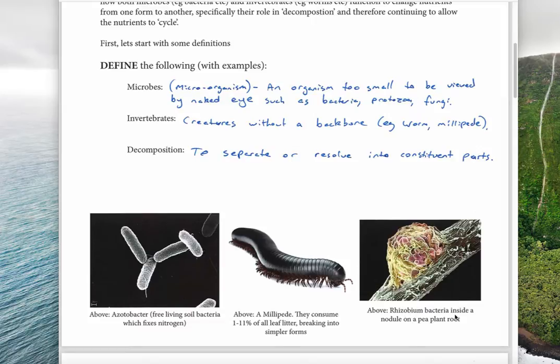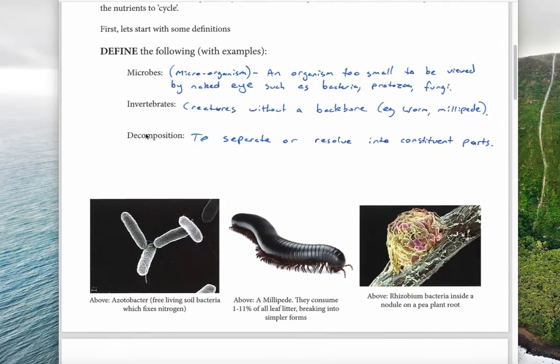This other one here, rhizobium bacteria, is found inside the nodules, which fix nitrogen from the atmosphere and make it so that plants can use it. The last thing is decomposition—it's separating or resolving into constituent parts, breaking something down into smaller and smaller parts or components.